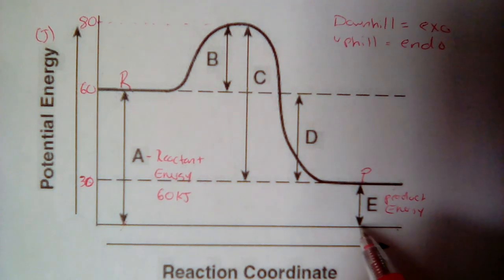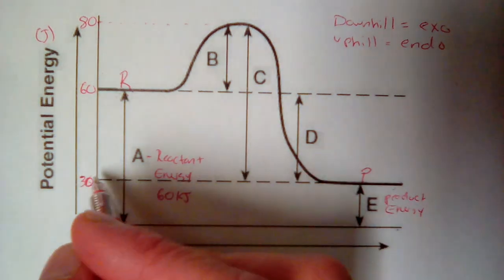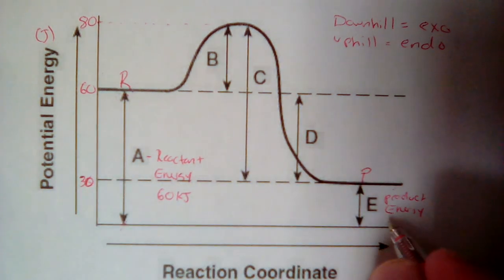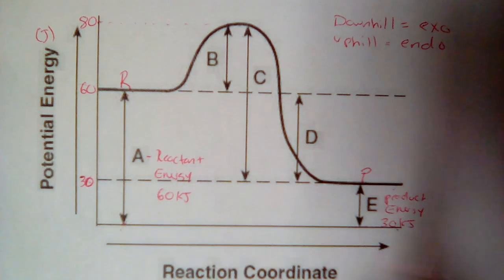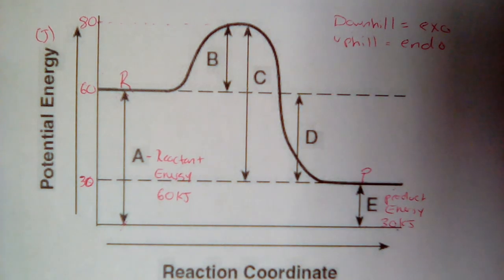So again, from the x-axis up to where the products are, E is our product energy. And again, using the numbers I wrote in here, I would say that is 30 kilojoules. And like I said, I can see how I've gone downhill. I've went from 60 kilojoules to 30 kilojoules. That's this downhill idea. That's how I know it's an exothermic reaction.